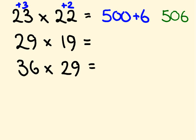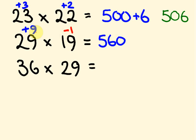For 29 times 19, using base 20: 29 is 9 above, 19 is 1 below. Cross addition: 29 take 1 is 28. Double it: 56, so 560. The deviations are plus 9 and minus 1, so minus 1 times 9 is minus 9. So 560 minus 9 gives 551.